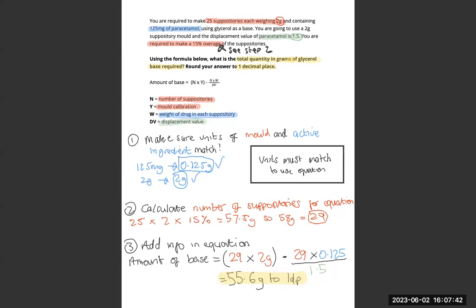To answer this question you have to put your final answer in grams to 1 decimal place. Now with this question you have to make sure that the units match. So with the quantity of paracetamol, I mean the weight, is 125mg.